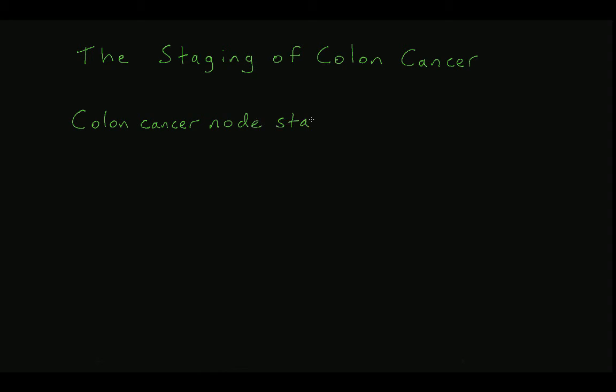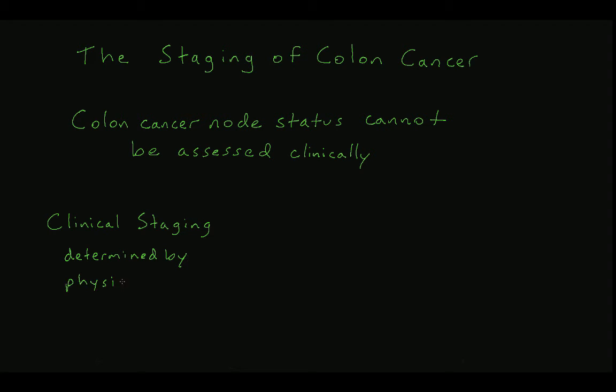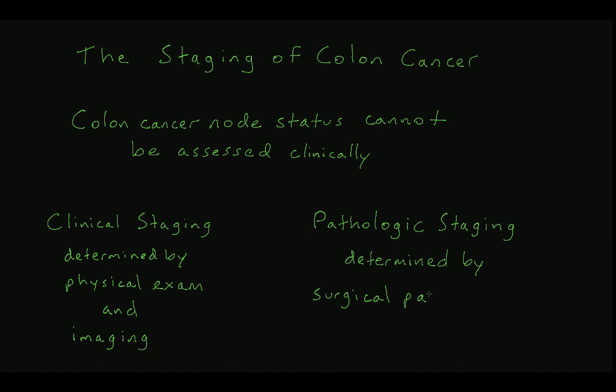Colon cancer is different from many other cancers because the nodal status cannot really be assessed clinically. When we refer to clinical staging, we mean any staging that can be determined based on clinical exam or imaging. With colon cancer, positive lymph nodes won't necessarily be visualized with a CT scan. The only way to reliably assess the nodal status in colon cancer is pathologically. Pathologic staging refers to staging based on a surgical pathology specimen. So when a colon cancer is resected, in addition to the tumor, it is important to resect the draining lymph nodes as well so that they can be assessed by a pathologist for the presence of cancer.